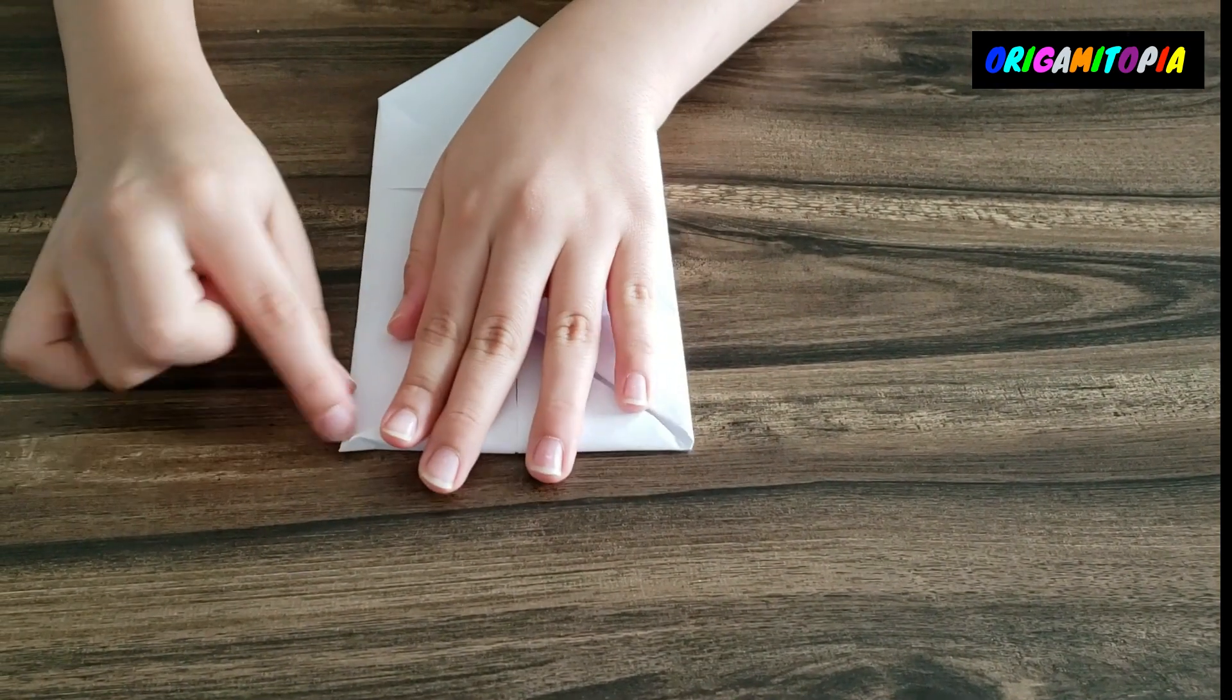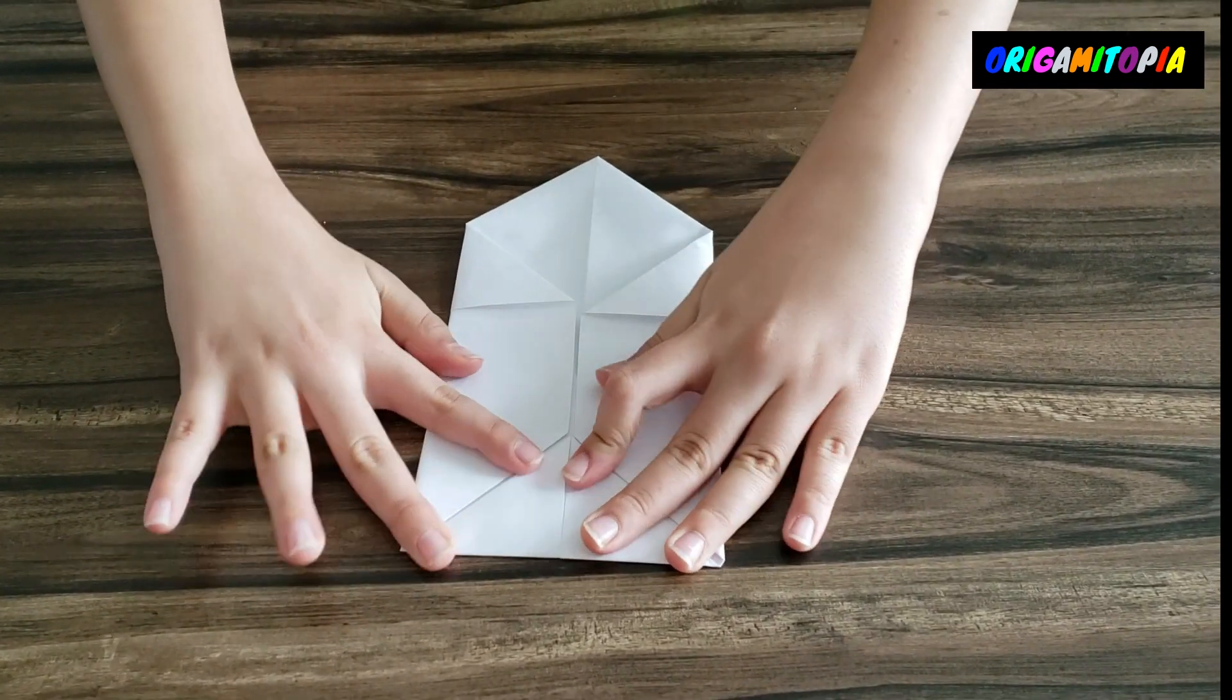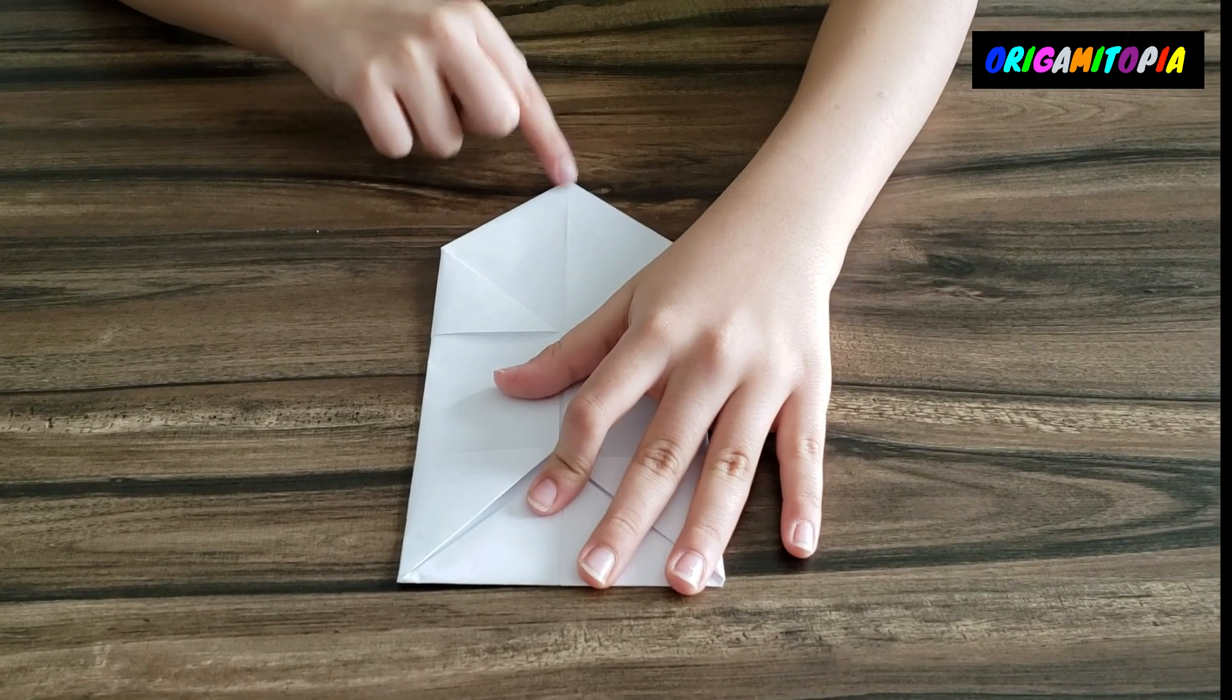You might just want to round that part off a little bit, just round it off, trace it, and do the same thing with this side.